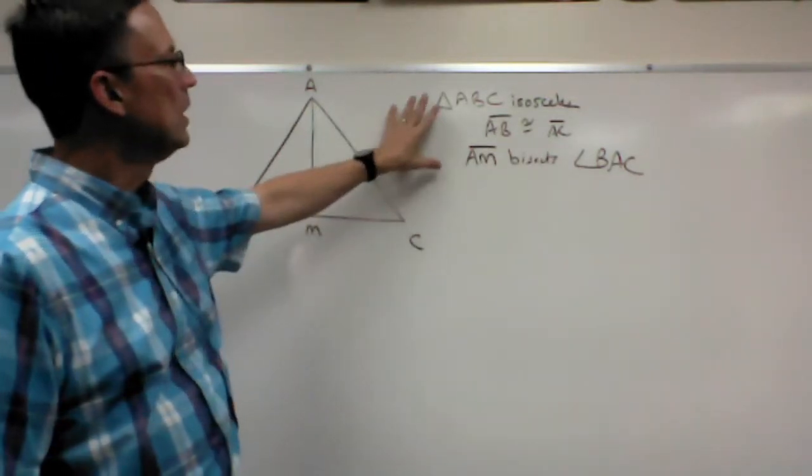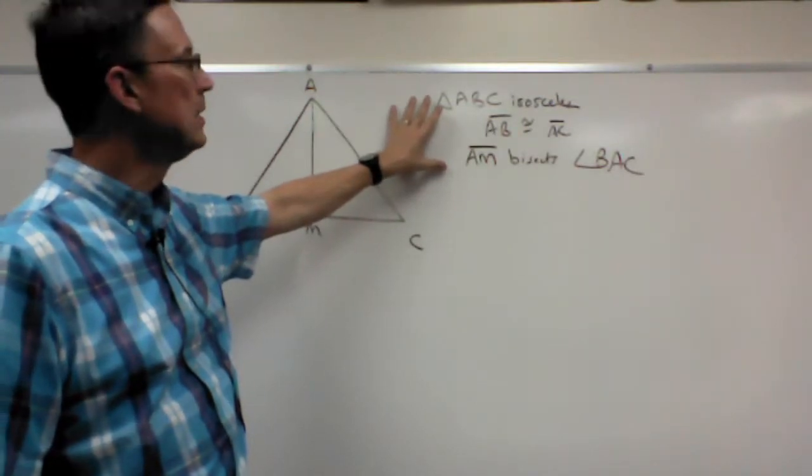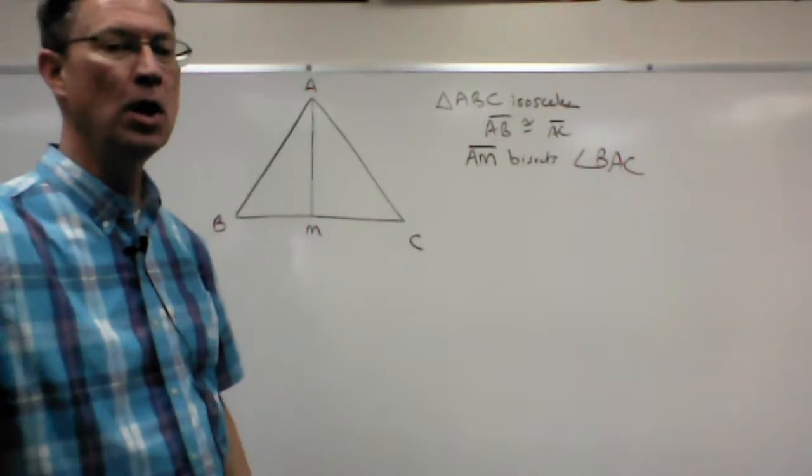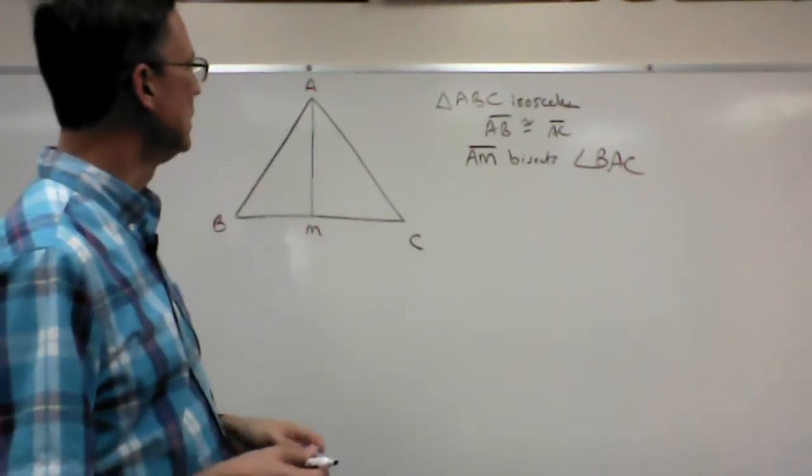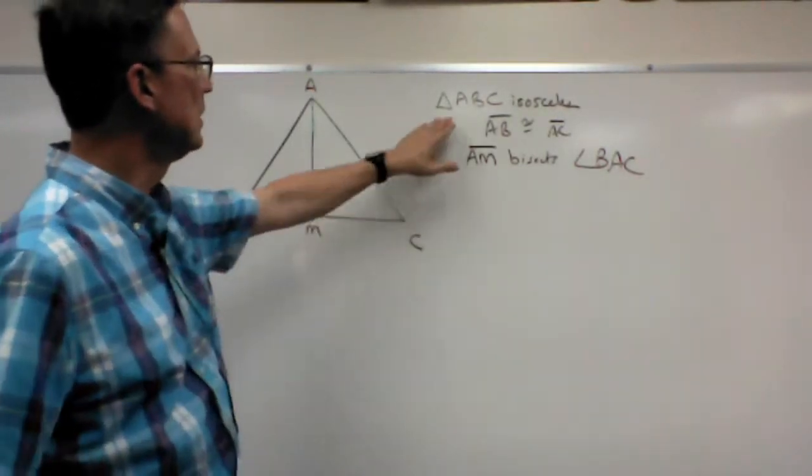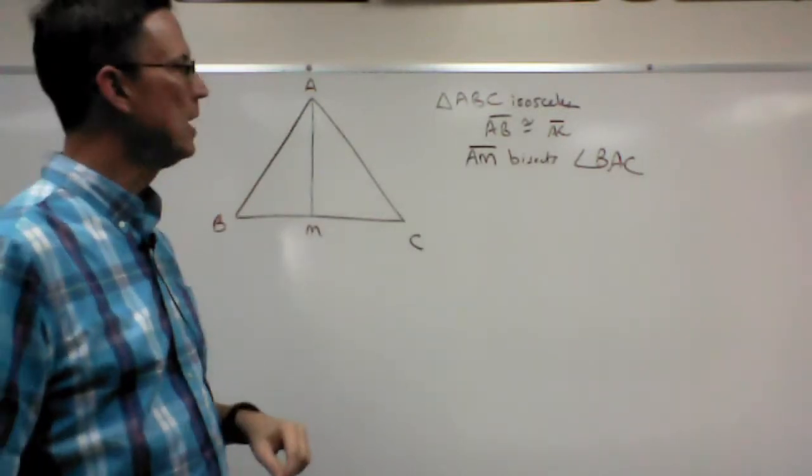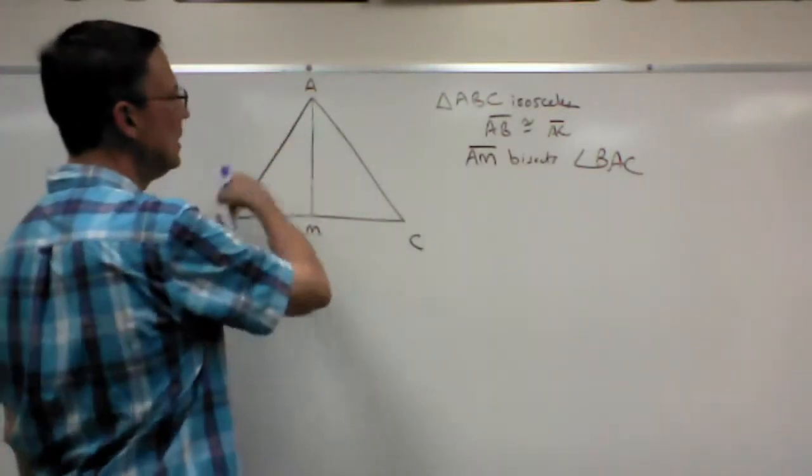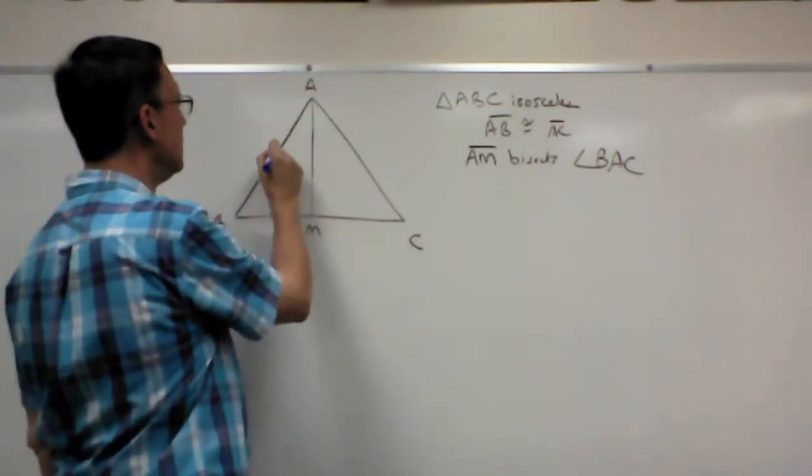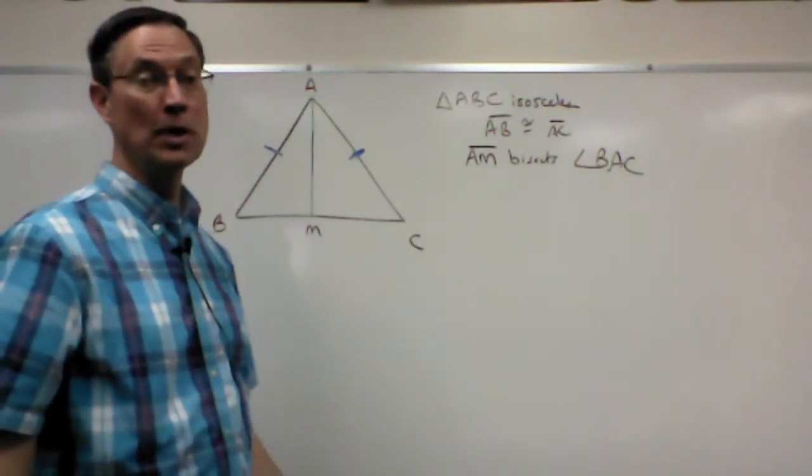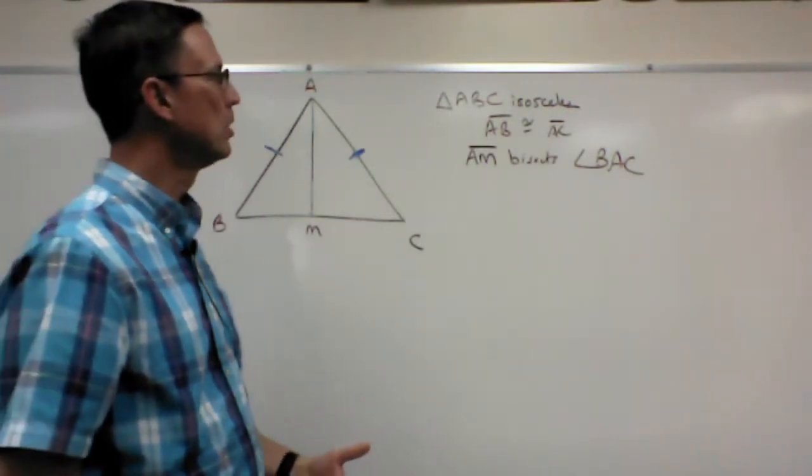Then let's analyze the information that they give and figure out what can we mark on here that we know. So one of the first things they tell us is that triangle ABC is isosceles, and we know that AB is congruent to AC. So we'll put a single tick mark on both of those sides to indicate those two sides are congruent.